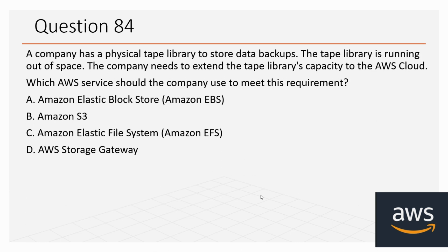Question number 84: A company has a physical tape library to store data backups. The tape library is running out of space. The company needs to extend the tape library's capacity to the AWS cloud. Which AWS service should the company use to meet this requirement? Options: A. Amazon Elastic Block Store, B. Amazon S3, C. Amazon Elastic File System (EFS), D. AWS Storage Gateway. The correct option is D, AWS Storage Gateway.